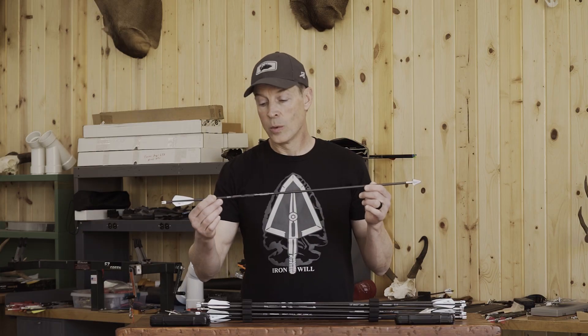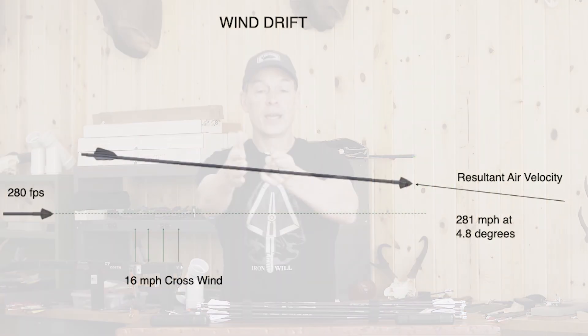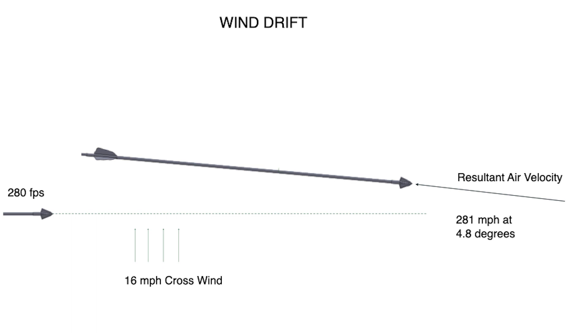I'm Bill from Iron Will and I want to talk to you about wind drift of an arrow — what happens when you shoot in a crosswind. As your arrow leaves your bow, it has the wind from the speed of the arrow, say 280 feet per second, coming at it. But that crosswind — let's say 16 miles per hour — means the arrow actually sees the resultant of those two wind velocities combined, which would be about a five degree angle at 281 feet per second.